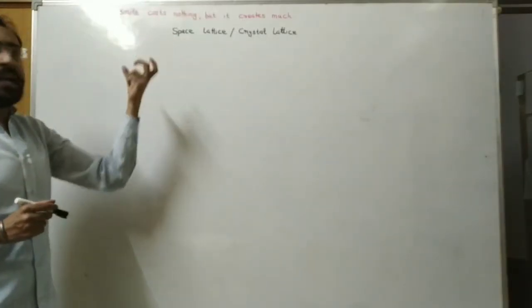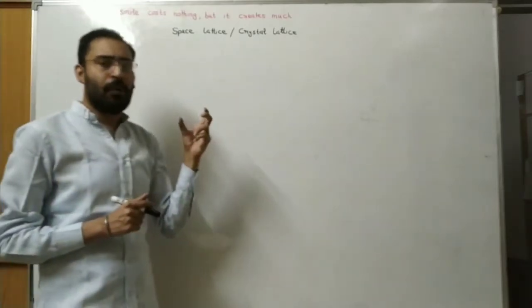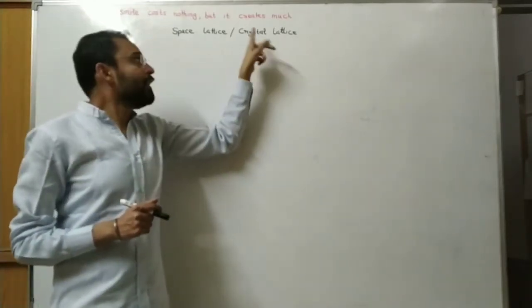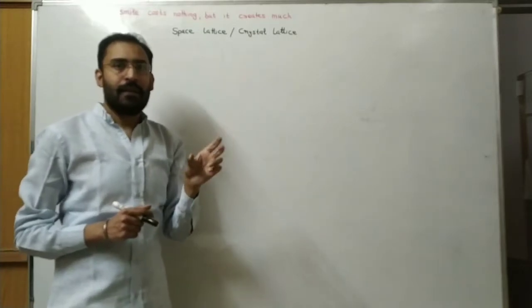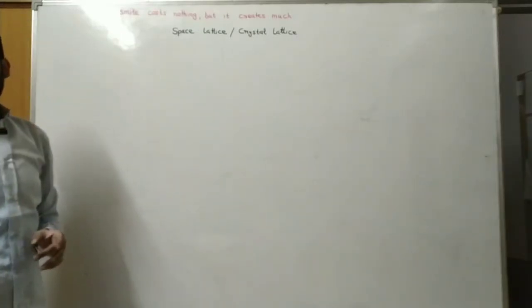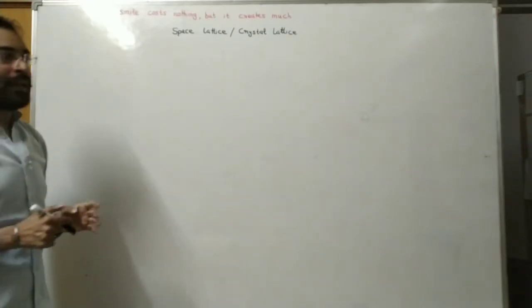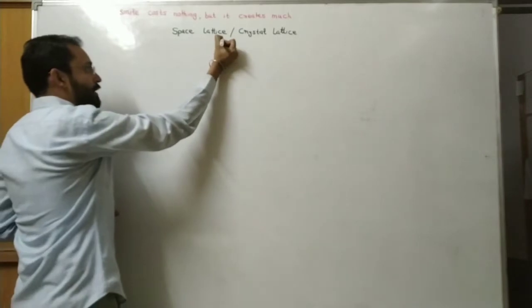The smallest portion of the crystal lattice which when repeated over and again completes the crystal lattice is known as unit cell.